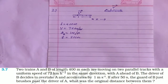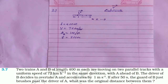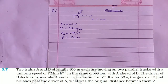NCERT solution, Chapter 3: Motion in a Straight Line, question number 7. Two trains A and B of length 400 meters each are moving on two parallel tracks with a uniform speed of 72 km per hour in the same direction, with A ahead of B. The driver of B decided to overtake A and accelerated by 1 meter per second square. After 50 seconds, the guard of B just brushes past the driver of A.